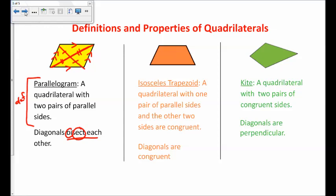Next is an isosceles trapezoid. A trapezoid is defined as a quadrilateral with one pair of parallel sides, and an isosceles trapezoid has the other two sides being congruent. The important property about the diagonals of an isosceles trapezoid is that the diagonals are congruent — those two diagonals are the same length.